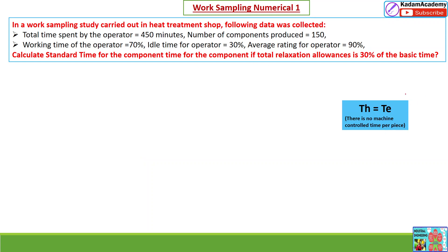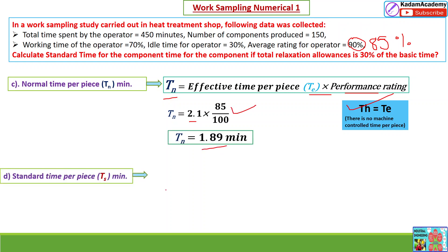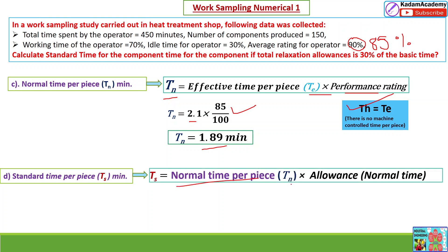In this industry, machine control time per piece is not separately required, so the normal time T_n is found from effective time multiplied by performance rating. We already calculated T_e = 2.1 minutes. Multiplying by the performance rating of 85%, the normal time T_n = 2.1 × 0.85 = 1.89 minutes.